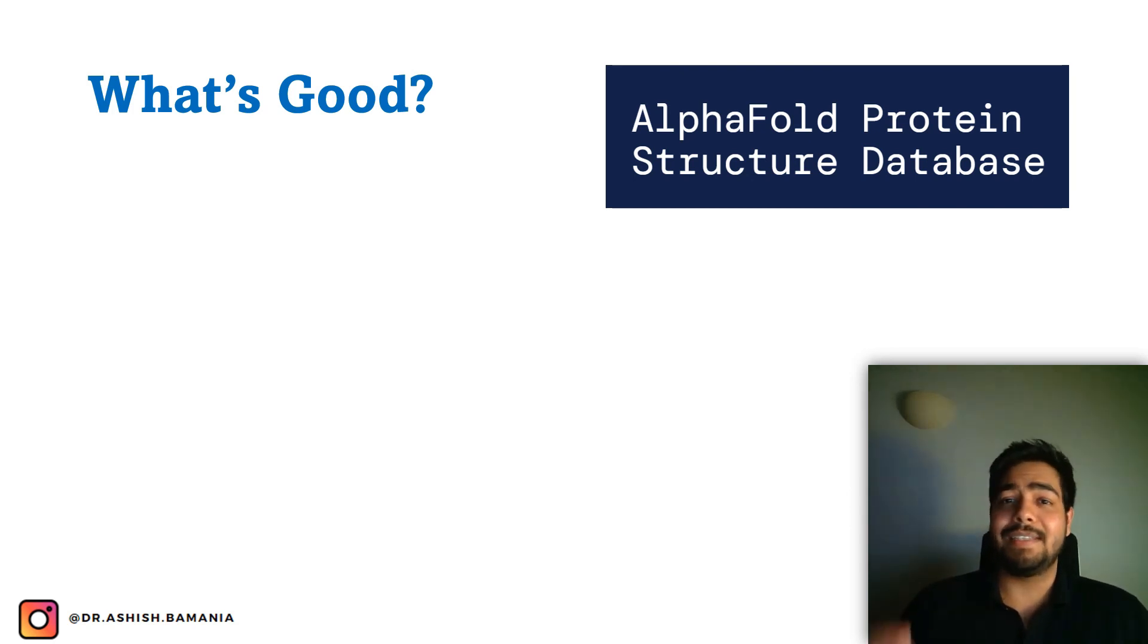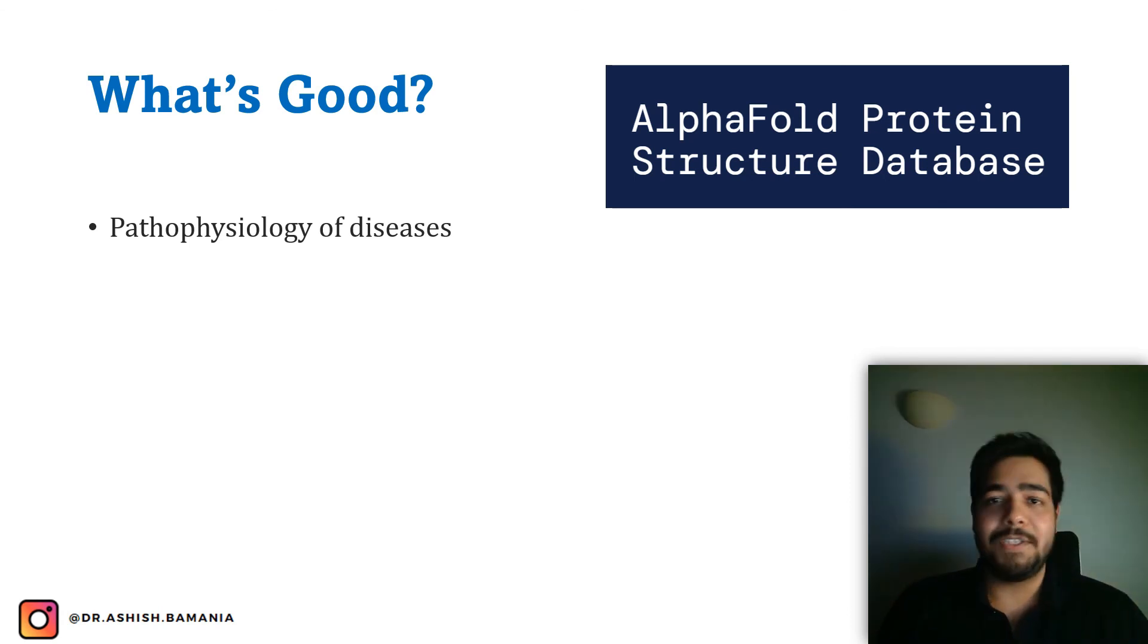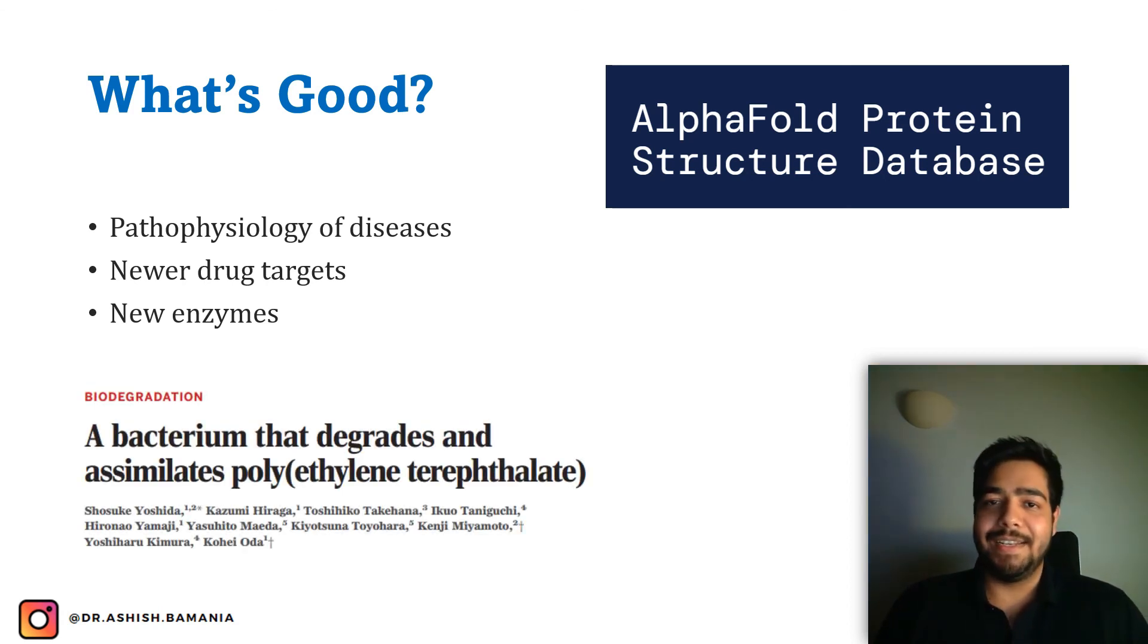It will also help us make new enzymes. For example, this bacteria was recently discovered in Japan, and this bacteria can degrade polythene. If we need to study the enzyme that can degrade polythene, we'll have to take it out, find its 3D structure, then modify it to make it faster. If we can do it with the help of AlphaFold, this will actually solve this climate problem, and this can be amazing. So AlphaFold has so many applications, and I'm really excited. I hope that you are excited as well. Thanks a lot for watching this video.